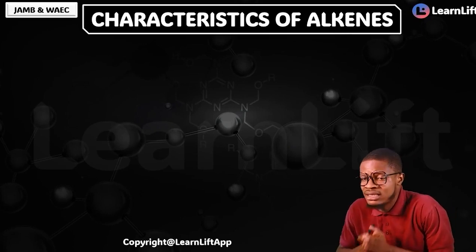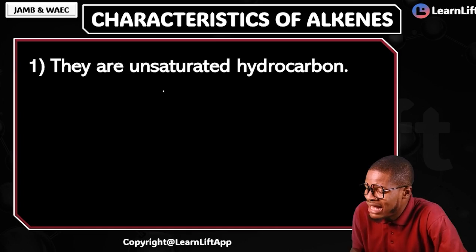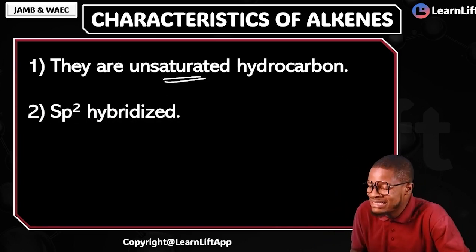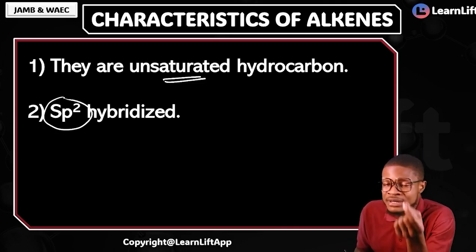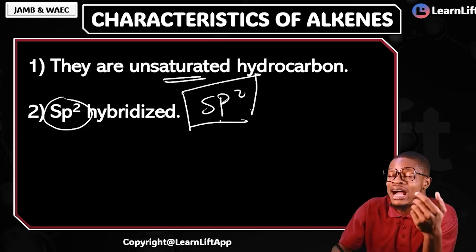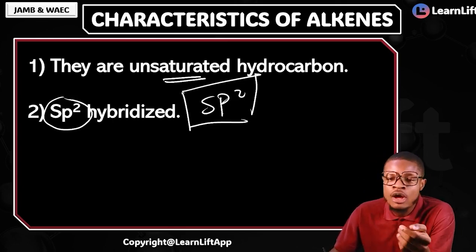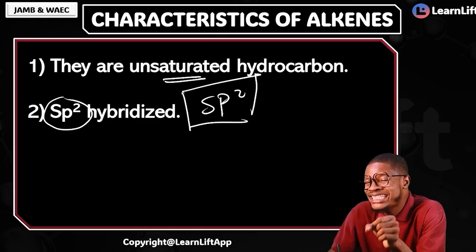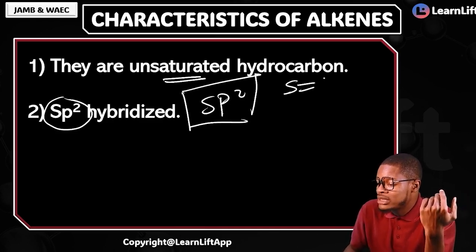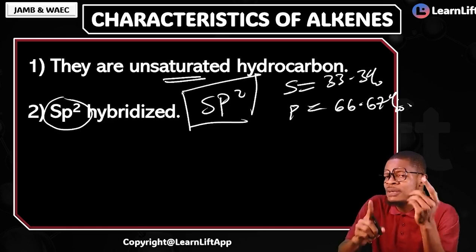What are the characteristics of alkanes? That's what JAMB and WAEC will not play with for you. Under the characteristics of alkenes, number one: alkenes are unsaturated aliphatic hydrocarbons — we have already dealt with that. Number two: alkenes have sp2 hybridization. They are sp2 hybridized. If you are sp2 hybridized, like alkenes, their shape is trigonal planar, their bond angle is 120 degrees, the percentage of s-character in sp2 is 33.33%, and the p-character is 66.6%.